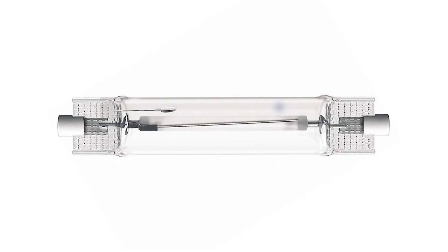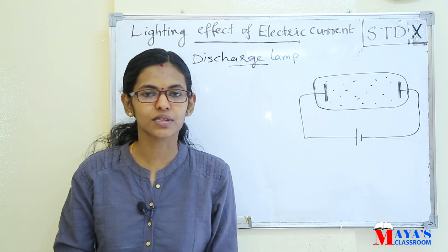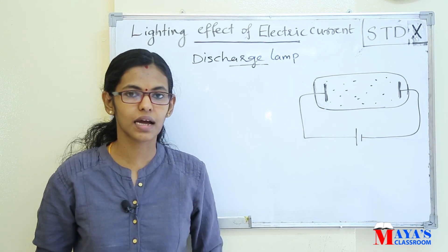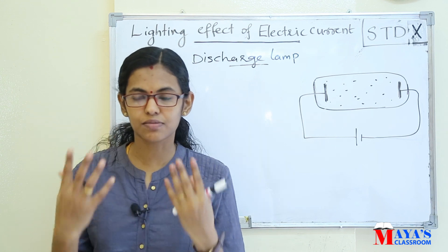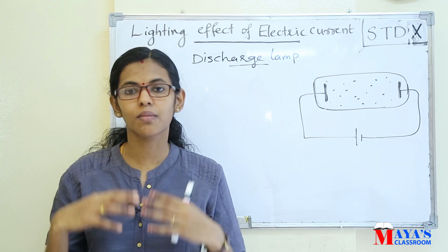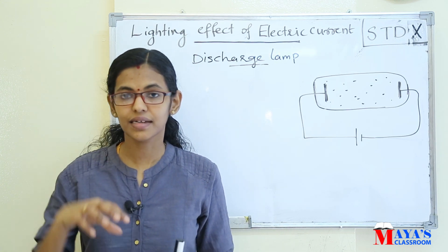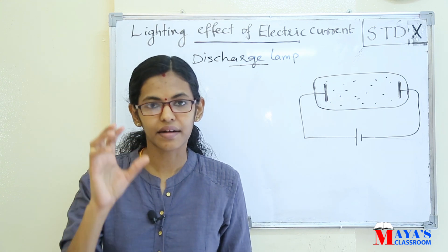This is a discharge lamp. There is a glass tube filled with a suitable gas. There are two electrodes at high potential. The gas molecules inside the glass tube are ionized by the high potential at the electrodes. The ionized atoms collide with other atoms, exciting them to a higher energy state. The atoms in the higher energy state are not stable.